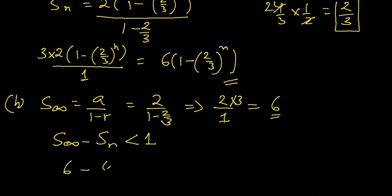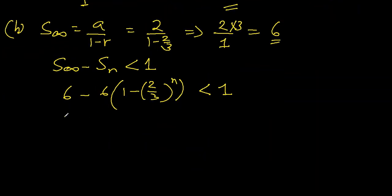Sum of first n terms is 6(1-(2/3)^n). So 6 taken common from both, we'll be left with 1 minus 1 plus... this minus will make this positive.